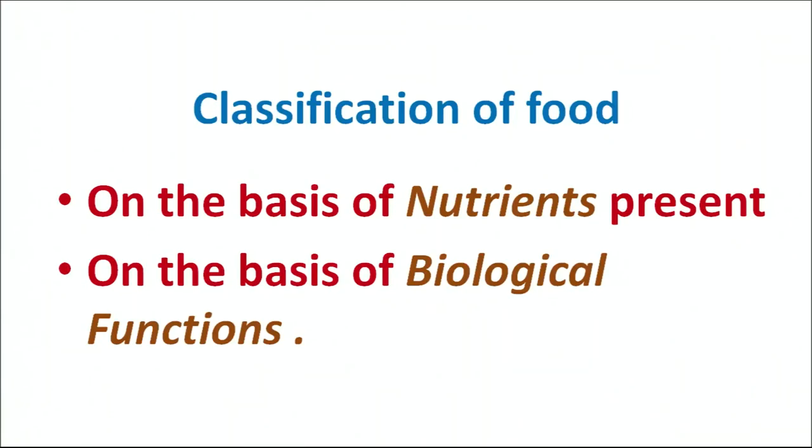Classification of food. Food has been divided into two basic categories: on the basis of the nutrients present in the food, and on the basis of the biological functions which it performs in our body.